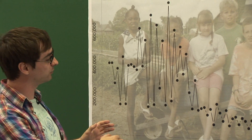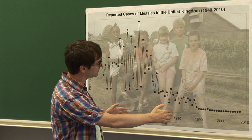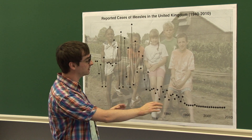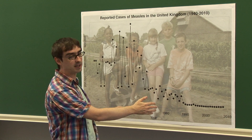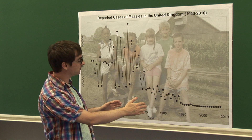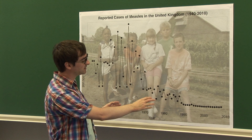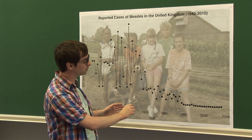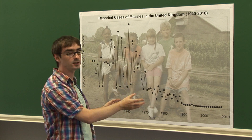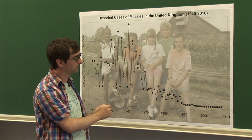If we look forward in time, in the 1970s there was a huge change in the dynamics of these disease reports. We see much less measles being reported, much more irregular in terms of when the big outbreaks were.